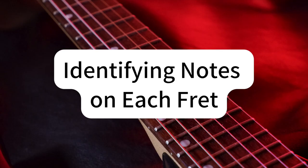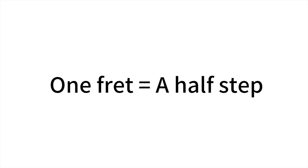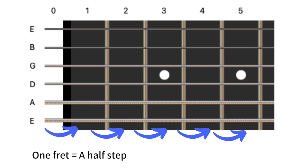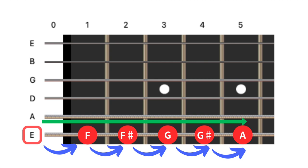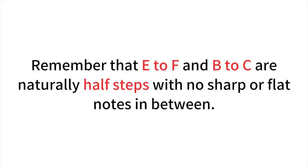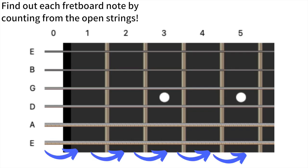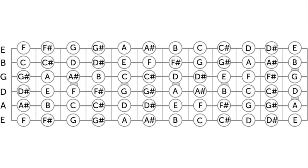Now that we're familiar with the notes of the open strings, we can start identifying the note on each fret. Each fret on your guitar represents a half step, so as you move up the fretboard towards the body of the guitar, you are increasing the pitch by one half step with each fret. Let's take the sixth string, the low E, as an example: open string E, first fret F (E to F is a half step), second fret F-sharp or G-flat, third fret G, fourth fret G-sharp or A-flat, fifth fret A, and so on. Remember that E to F and B to C are naturally half steps with no sharp or flat notes in between. This pattern holds true for every string — if you know the open string note, you can figure out the note on any fret by simply counting up.